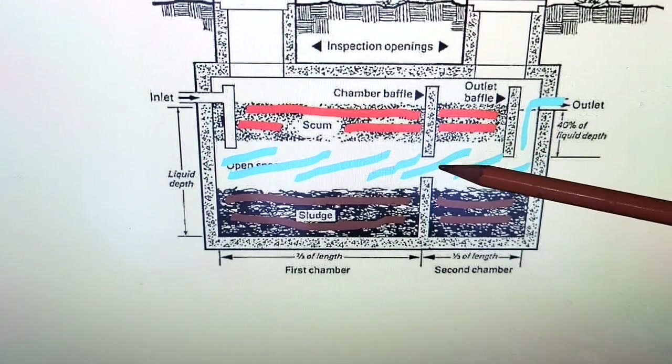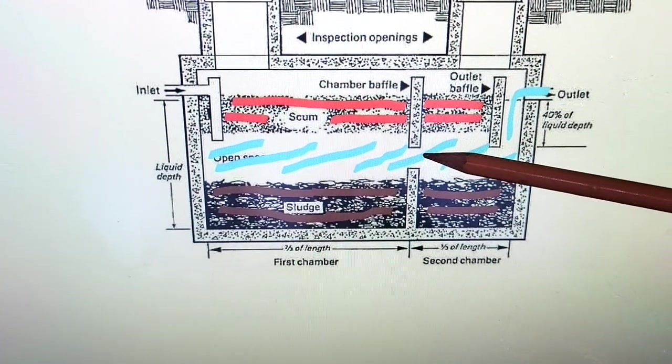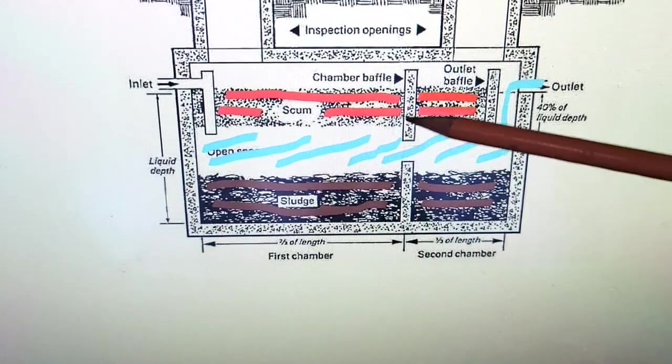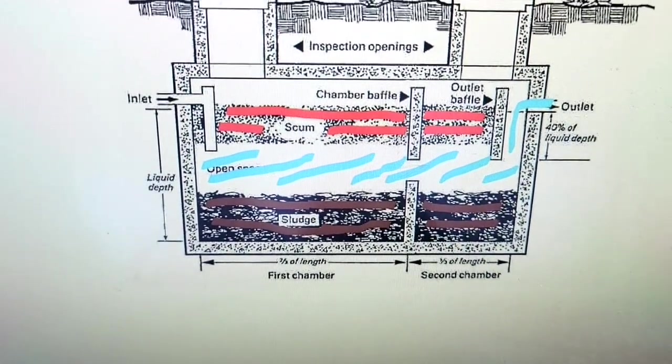And then about halfway up, there's a fairly large hole, a four to six inch hole through the middle of that wall. Just a round hole, four to six inches in diameter.